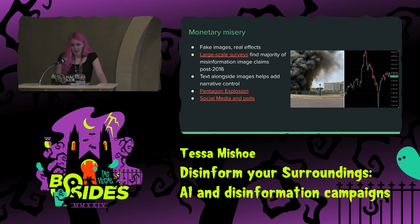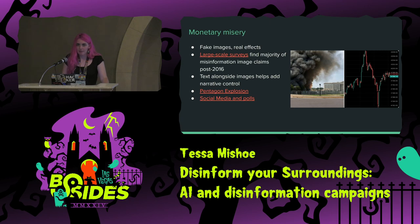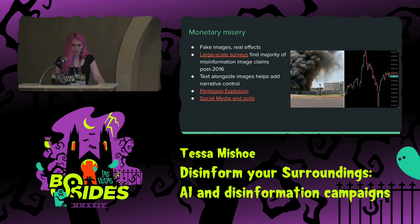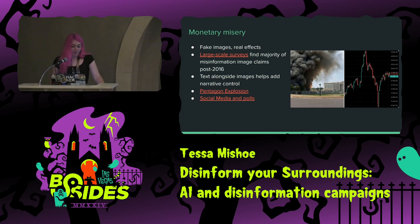In March of 2023, an image was widely shared across the Internet of smoke billowing from the Pentagon. As the title of this talk suggests, it wasn't real. Even so, it was shared by numerous news outlets including Russia Today and a fake Bloomberg account on Twitter. 'Reports of an Explosion Near the Pentagon in Washington, D.C.' was the headline. The timing of the images released perfectly matched the opening bell of the stock market, causing a 0.3% plummet in the S&P 500. Gold prices climbed briefly, and general panic ensued. Yet here we are today — no Pentagon issues. Larger surveys have found that this phenomenon of political and market effects from generated images was worst post-2016, and elections seem to cause a surge in popular use.